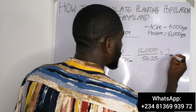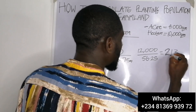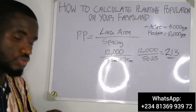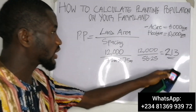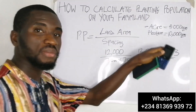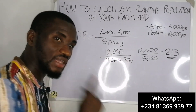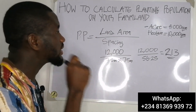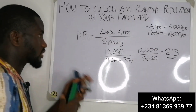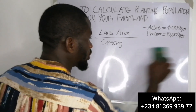Our final answer is 213. So 213 is the number of coconut palms that can occupy three acres of land. That is an example using a tree crop.